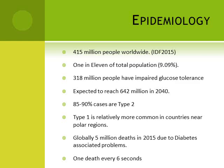Globally, 5 million deaths in 2015 were due to diabetes-associated problems — complications directly related to diabetes. That means it is a very important problem, and if we can control it, we can prevent so many deaths. Five million deaths means one death every 6 seconds — you can imagine the gravity of the situation.